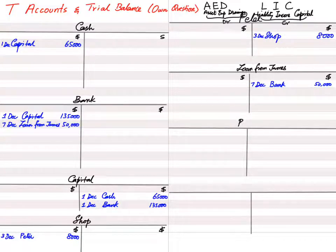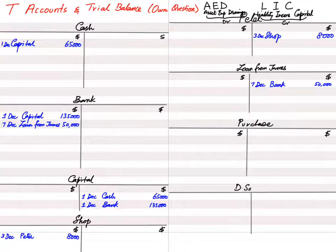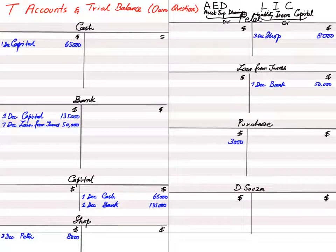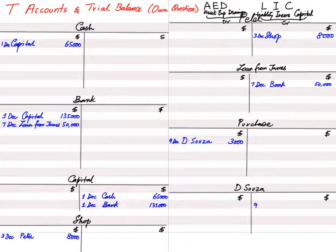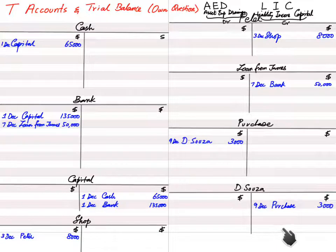Transaction 4: on 9th December, we bought goods from D'Souza for $3,000, agreeing to pay later. When buying goods, we use the purchases account, which is always debited because the asset of stock is increasing. Since we haven't paid D'Souza yet, he is our liability — also known as trade payable. The entry is: debit purchases account with reference 'D'Souza,' and credit D'Souza's account with reference 'purchases.'